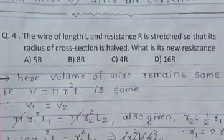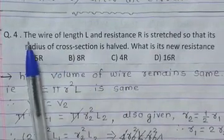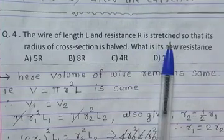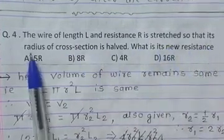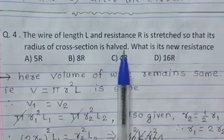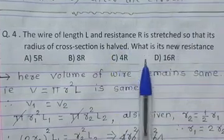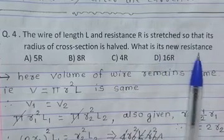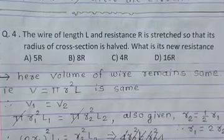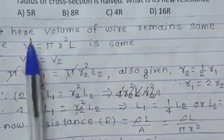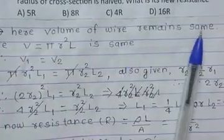Question number 4: The wire of length L and resistance R is stretched so that its radius of cross section is halved. What is its new resistance? Here volume of wire remains same.